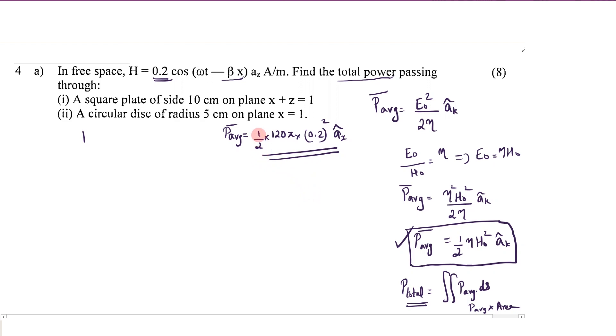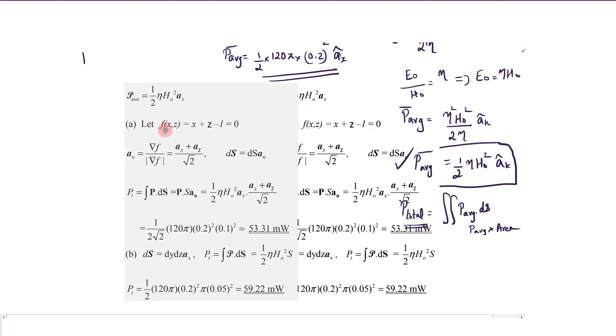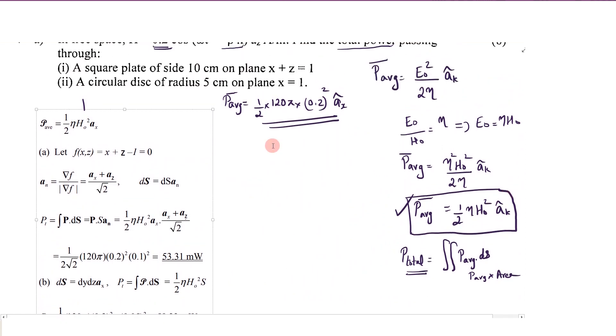Now you have to calculate the area. While calculating the area, in the first case a square plate of side 10 cm. When you consider area S first, the magnitude part, square plate of side 10 cm means in meters you can write it as 0.1 meter, so 0.1 into 0.1, that is the area. This is 1 by 2 into 125 into 0.2 square, that is P average, and S the magnitude is 0.1 into 0.1.